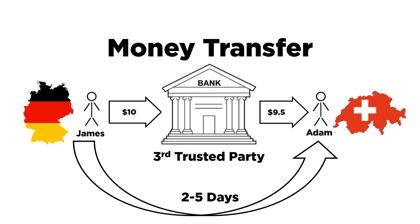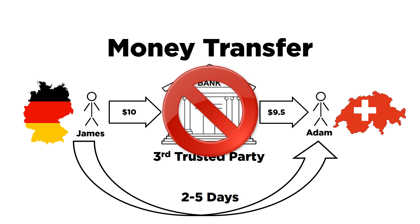Blockchain, on the other hand, does three things. One, it removes the third party from money transfer. Two, the transfer takes almost no time at all. And three, it's cheaper.